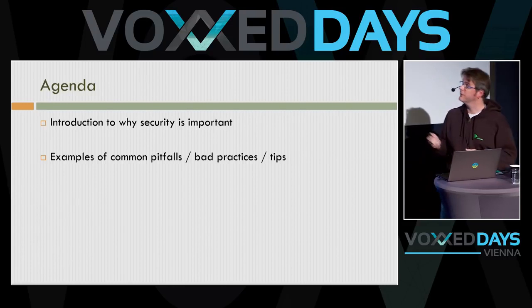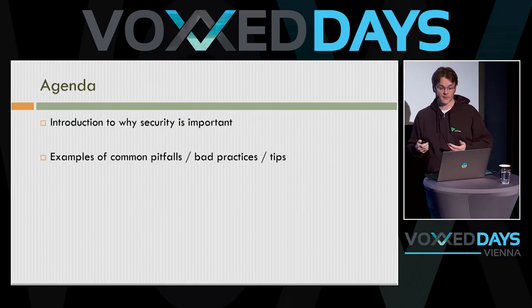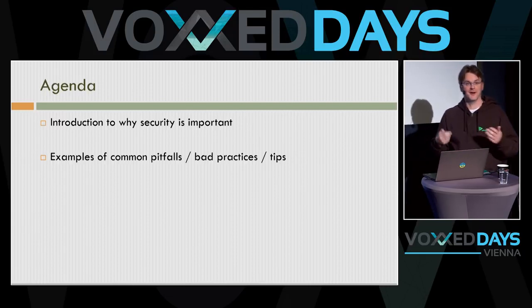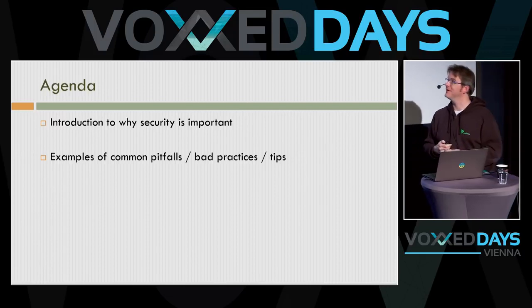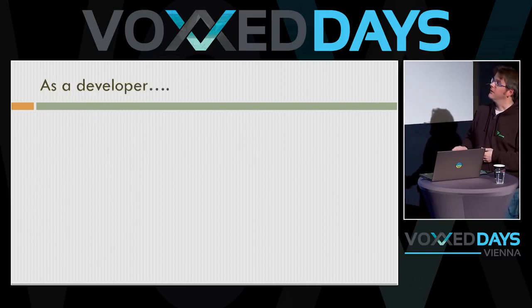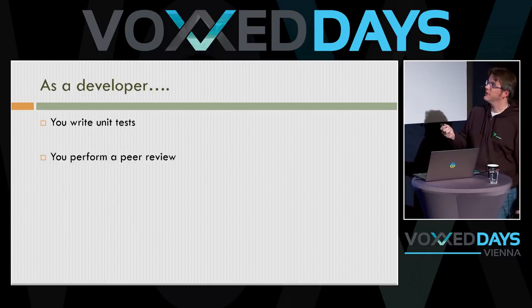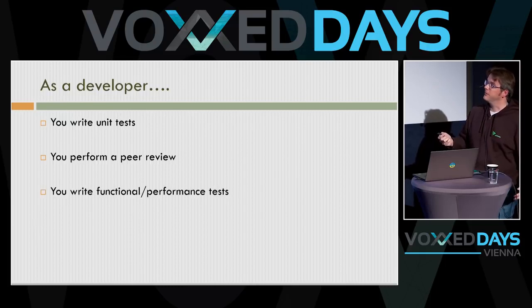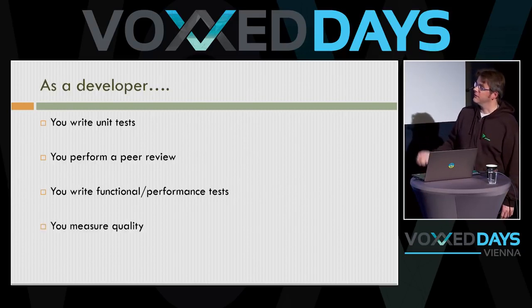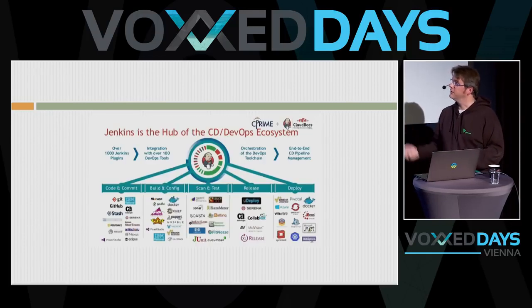The agenda is as follows: I'll first introduce why security is important and why it should be incorporated within your daily process as a developer. Then we'll hopefully get through 10 pitfalls, bad practices, and some tips. As a developer, you write code, write unit tests, perform peer review or pull requests on GitHub, write functional and performance tests, and measure quality with SonarQube or similar tools.